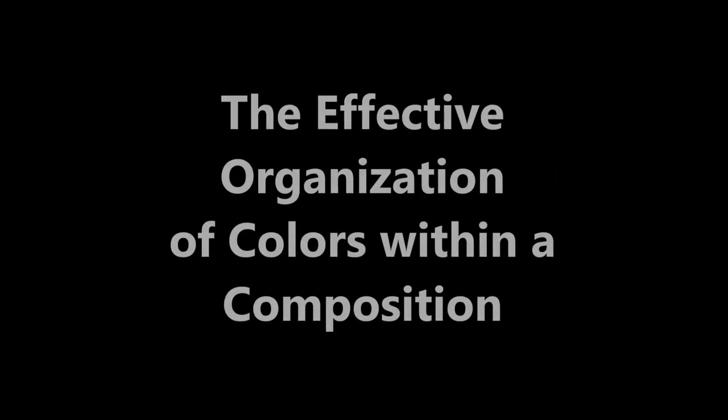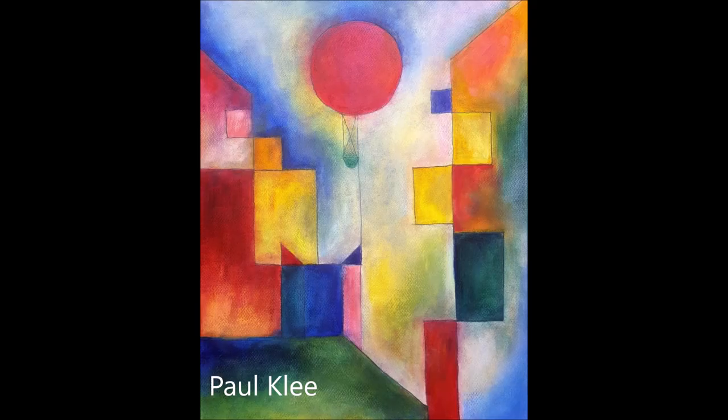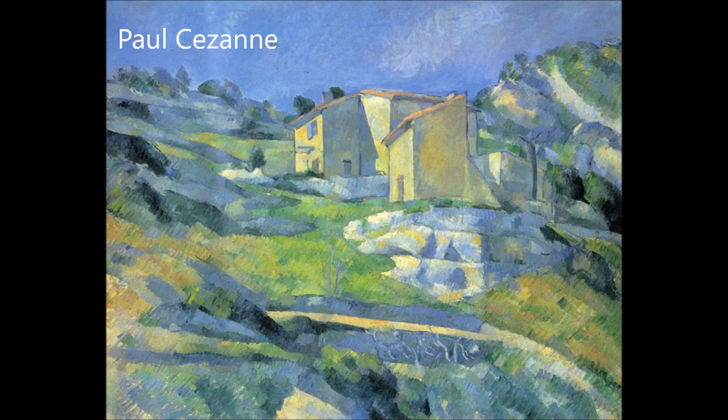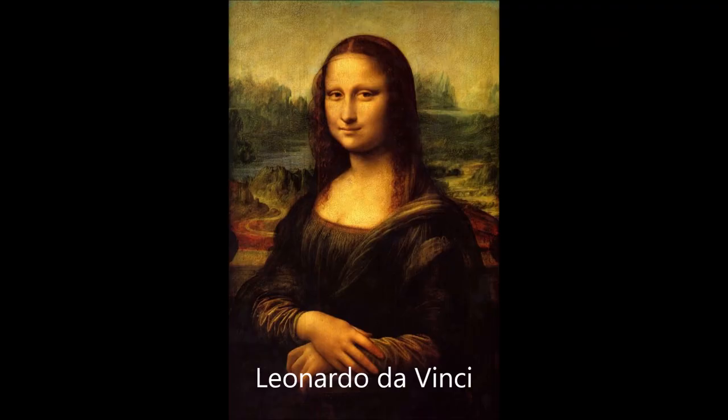First, the properties of color, and second, the effective organization of colors within a composition. Understanding the properties of color is perhaps the most important part of color theory and is the foundation upon which all other color knowledge is built.